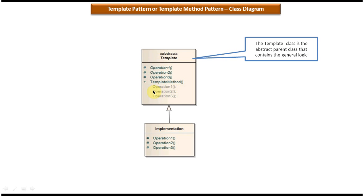So if you see this one, to achieve the common functionality, first it has to execute operation 1, then it has to execute operation 2 and it has to execute operation 3 methods.